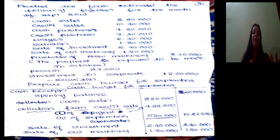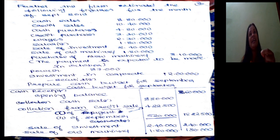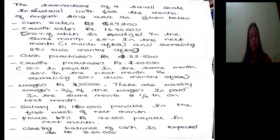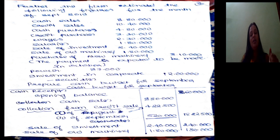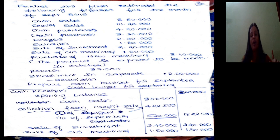So prepare the cash budget for September. We have information of August and September. Certain receipts and payments of August will be received or paid in September. Now let's start preparing the cash budget for September. We begin with cash receipts — the opening balance. The closing balance of August becomes the opening balance of September, which is Rs 3,60,000.